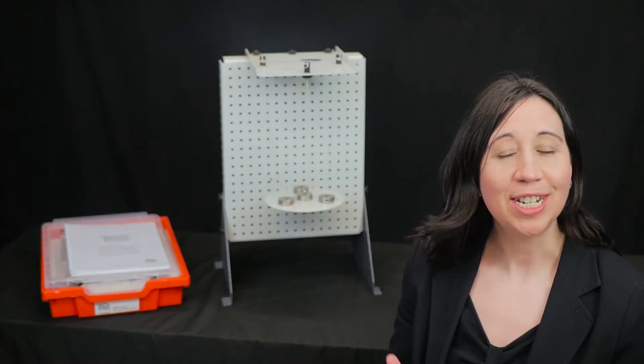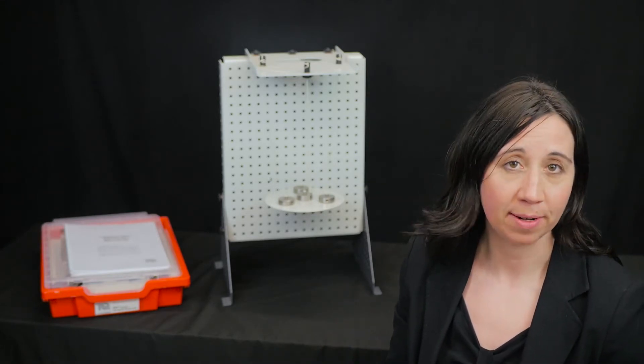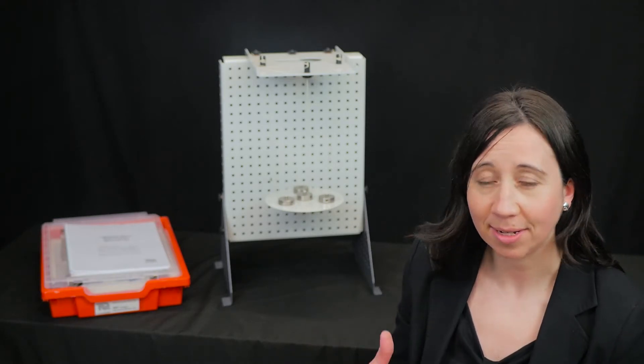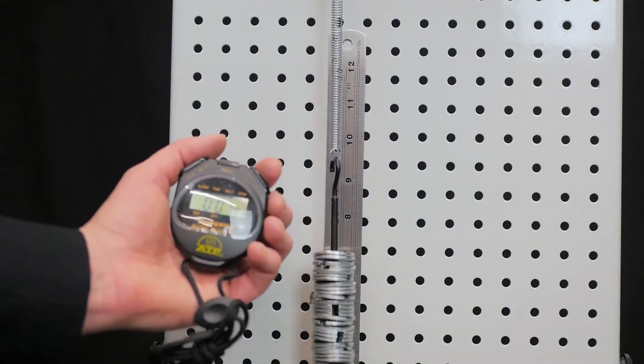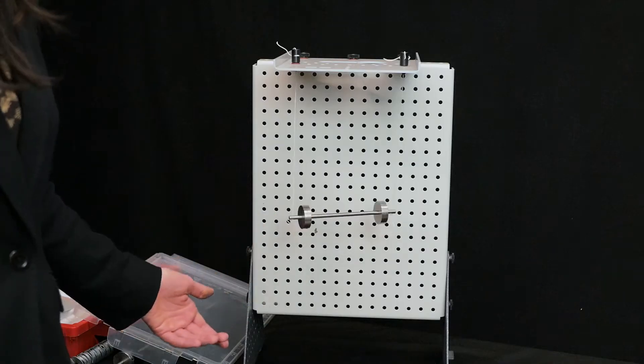With this kit you can carry out six different experiments that focus on simple harmonic motion in springs and pendulums. Students test different pendulums and a spring to see how different factors such as mass or pendulum length affects simple harmonic motion and the period of oscillation.